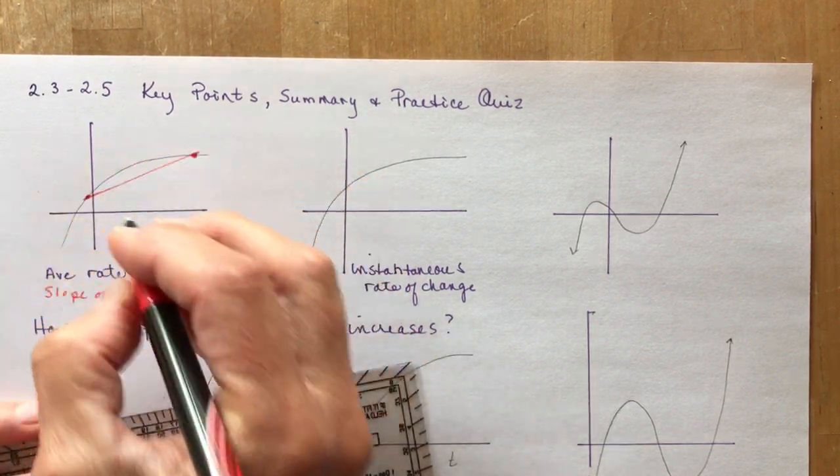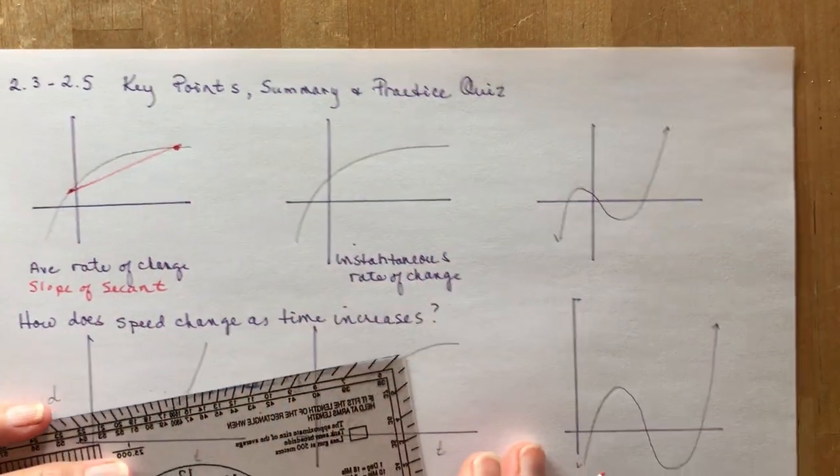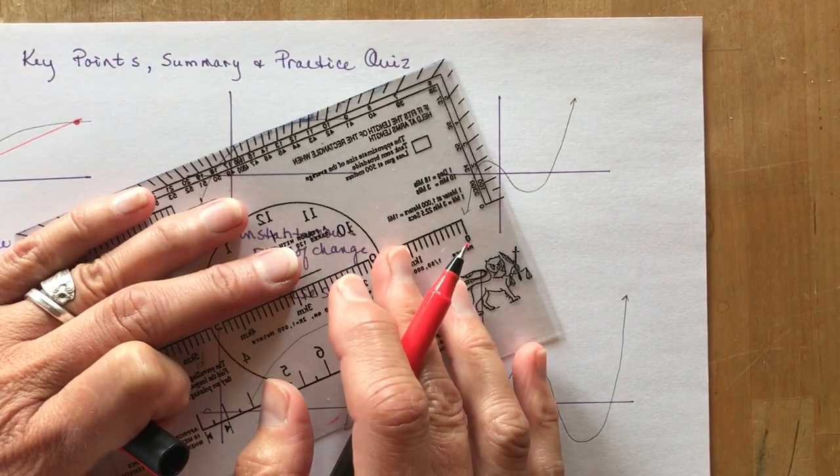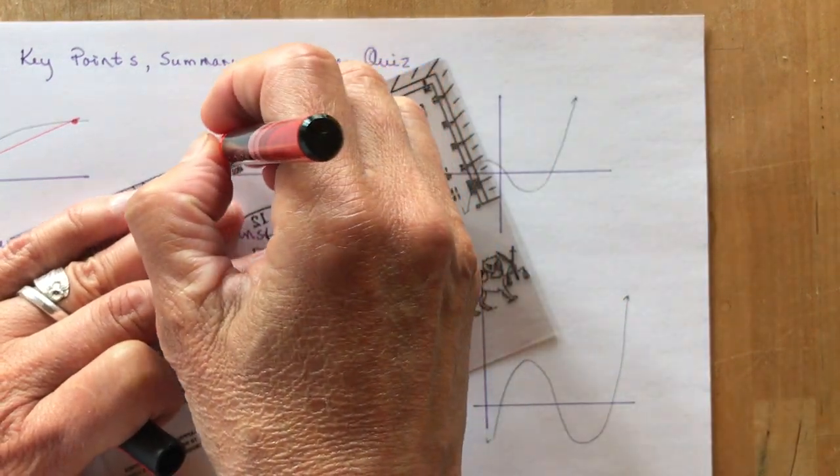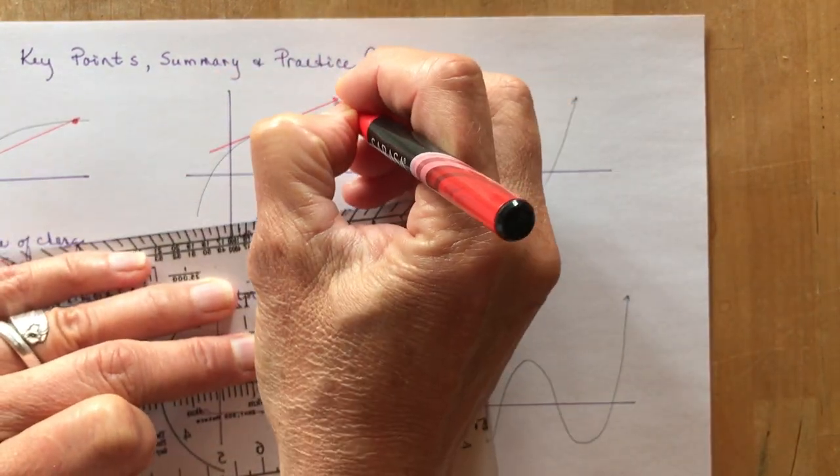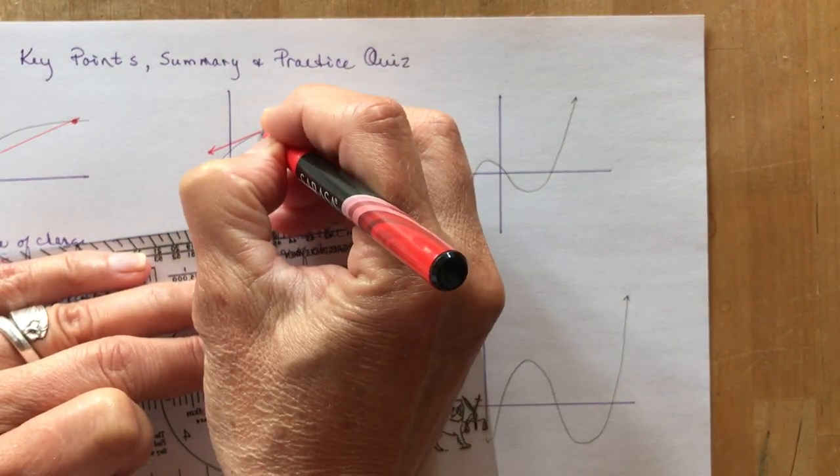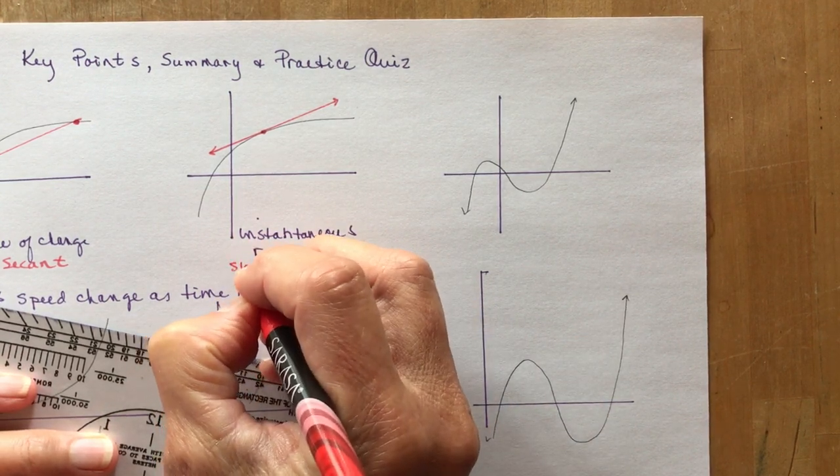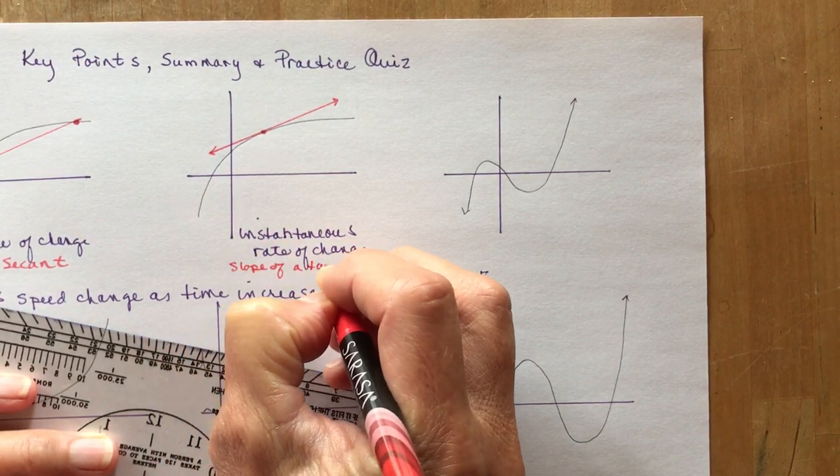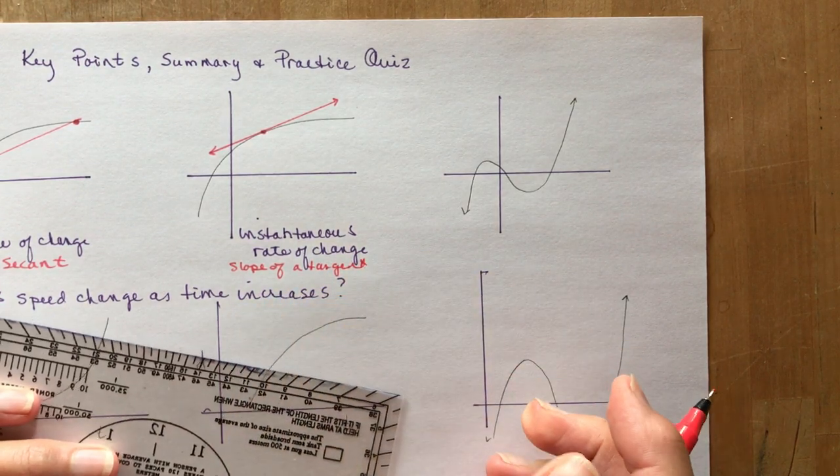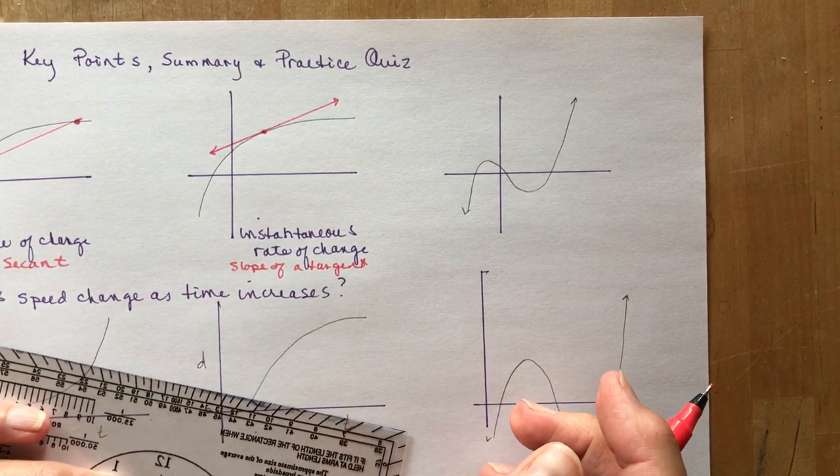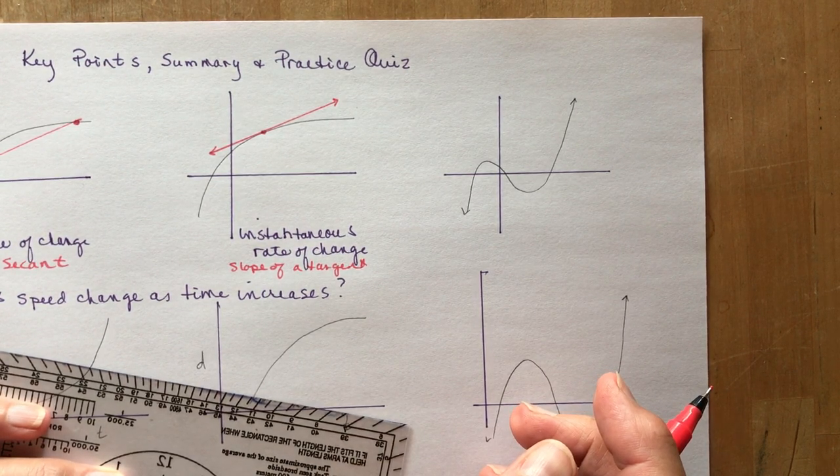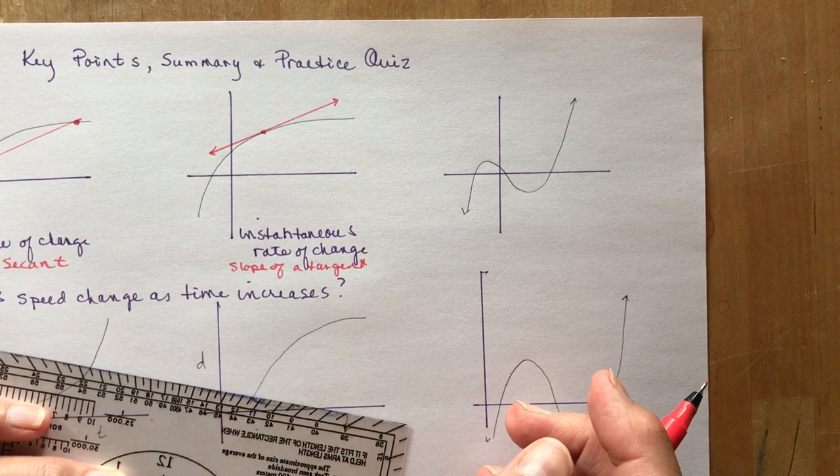This from here to here is a secant for this curve, and if I extended it, it would be a secant line. Now the instantaneous rate of change is the slope of a tangent, so that means I need to only touch this curve at one point, which of course is really hard to do when you're estimating. In calculus you will know exactly how to find that rate of change at a very specific point. This is the slope of a tangent.